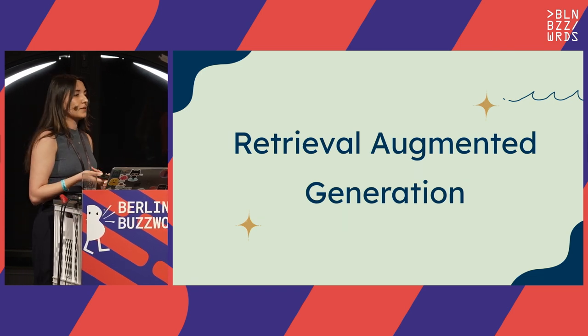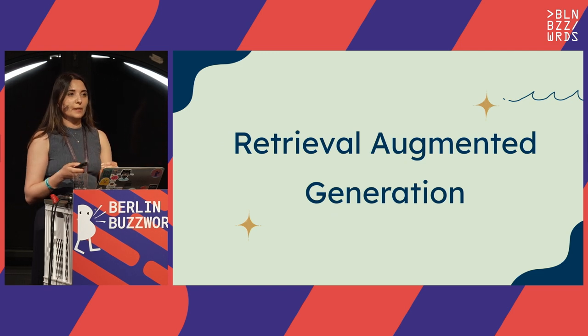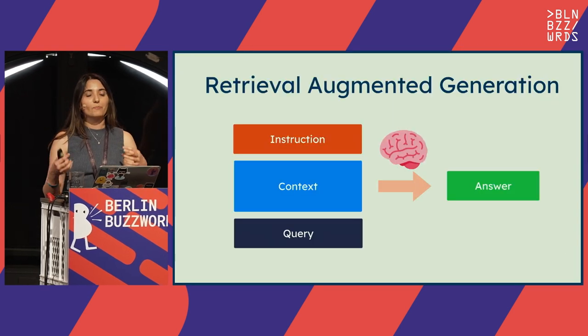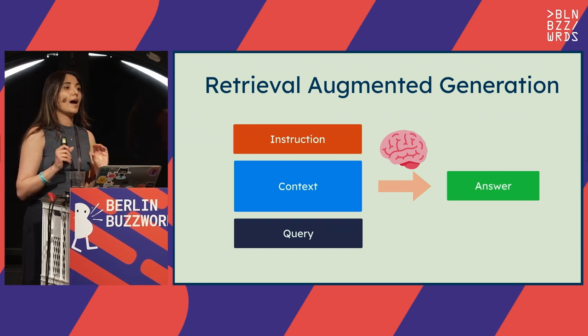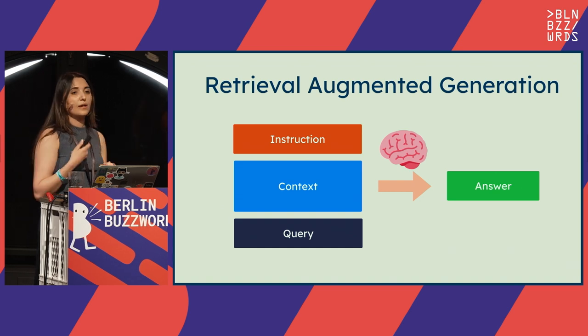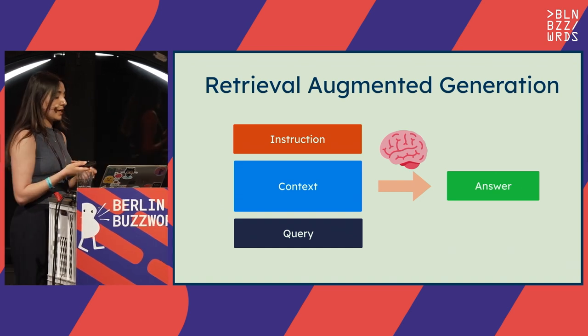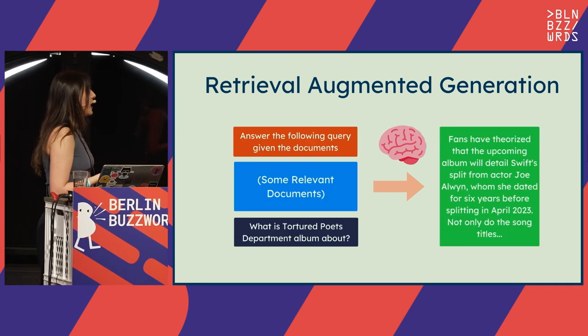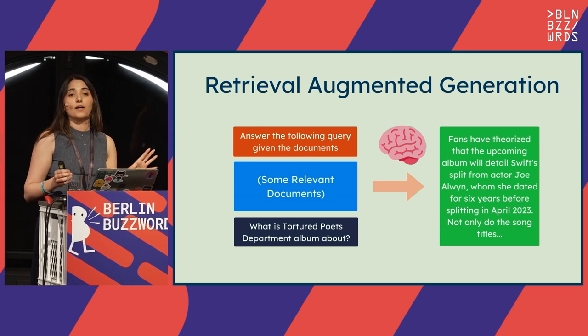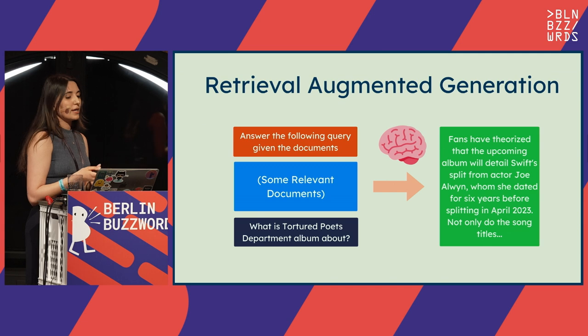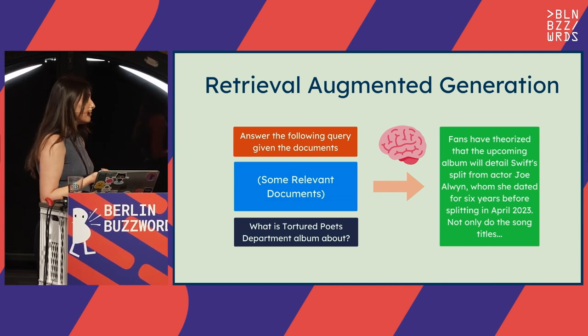For retrieval augmented generation, instead of just passing the query, we provide a more sophisticated prompt to our large language model. In this prompt, I give an instruction, then I provide some relevant context, and then I pass my query. By looking at the context I provided, the large language model can answer the question. Going back to the Taylor Swift example, I give some instructions, provide information about Taylor Swift's albums, and when I ask the same question, it correctly answers. This means I don't need to fine-tune the large language models — I can just provide relevant context.